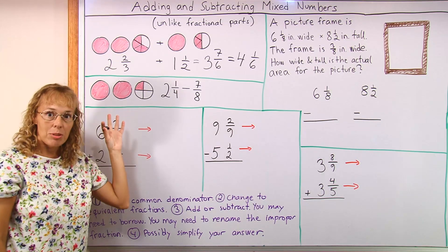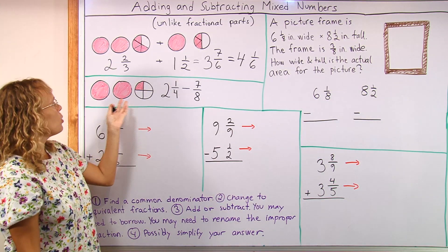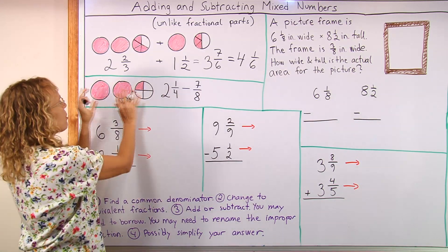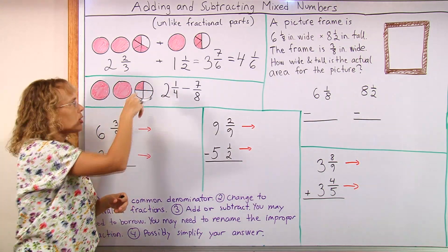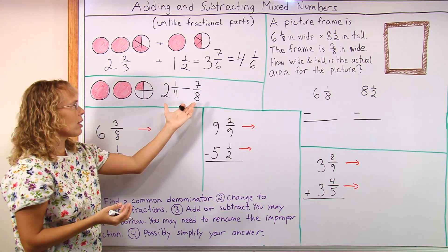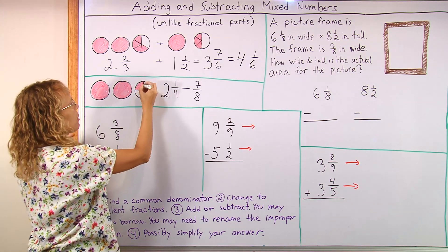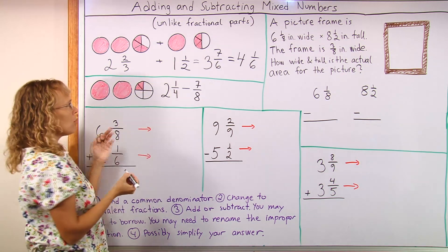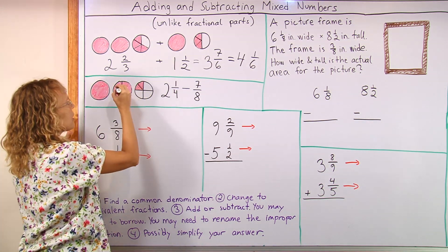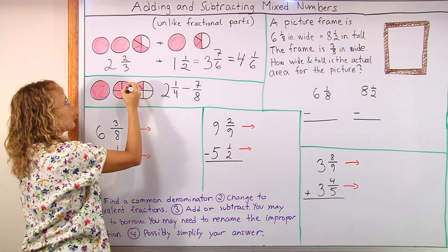Now let's say we have a subtraction problem. There's 2 and 1 fourth, and then take away 7 eighths. And I want to take away from here 7 eighths by crossing out pieces. But there are not any eighths to start with. I have to make the eighths by splitting this into 2. So now I have 2 eighths. And then I need to divide this into eighths too, so I can take away some.